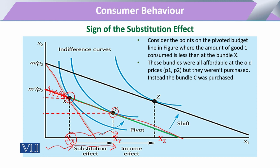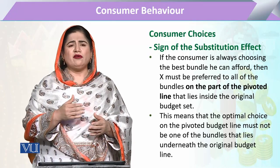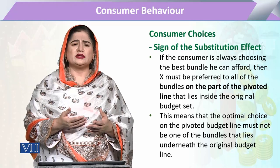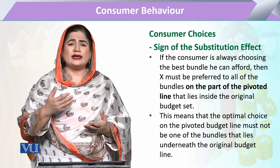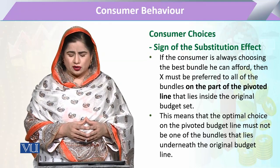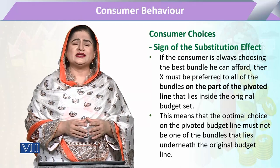These bundles were already affordable to the consumer — both X and Y — but now the consumer has purchased more. So, examining this situation, the substitution effect will always be positive: if price decreases, the consumer increases the quantity demanded, and if price increases, the consumer decreases it. The optimal choice on the pivoted budget line must be a bundle that is at least as good as the previous bundle — not less.